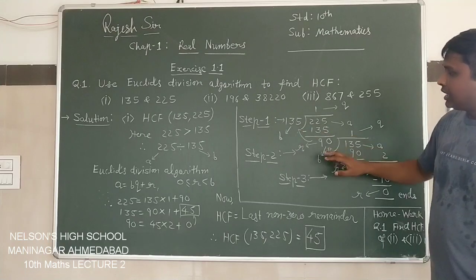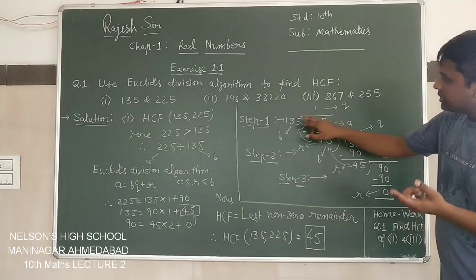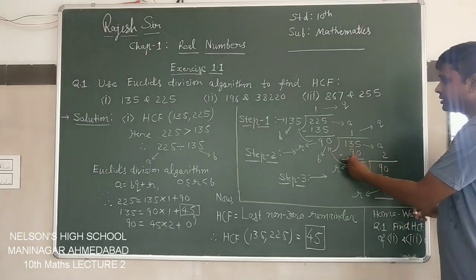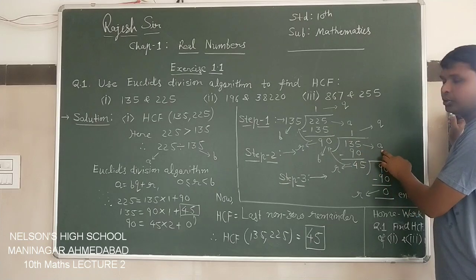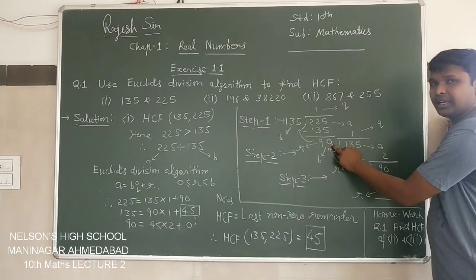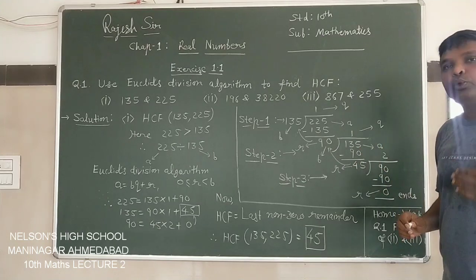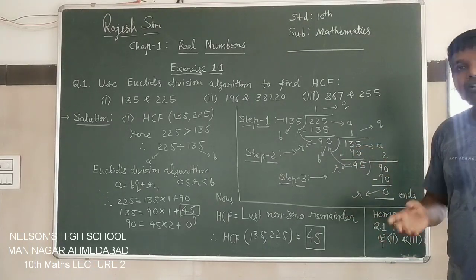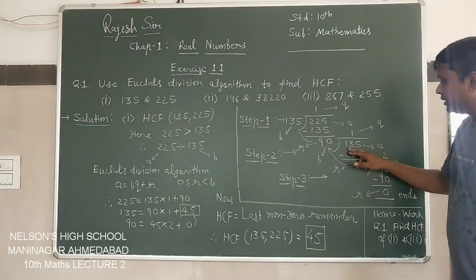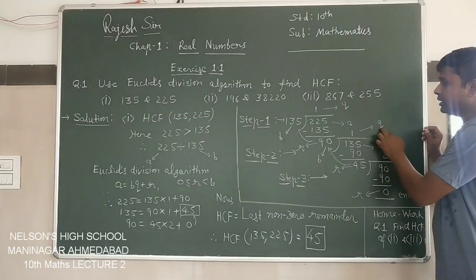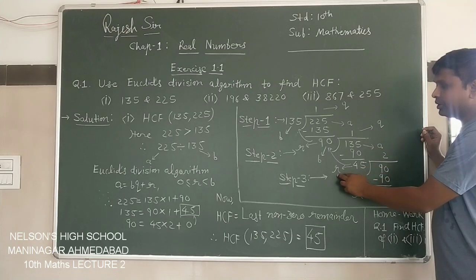Step 2 is, what to do? The remainder 90 becomes the divisor now. This remainder becomes the divisor and this divisor becomes the dividend, 135. So for us now, this divisor becomes dividend and we note it as A, and remainder becomes divisor so we will consider this as B. A and B we have, we need to find Q and R by division. 90 ones are 90, 90 twos are 180 which will be more, so 90 ones will go.